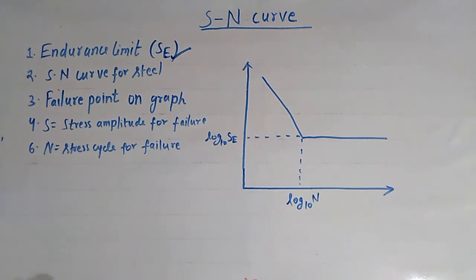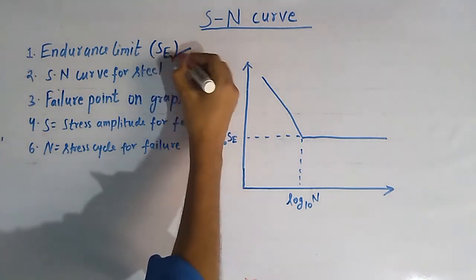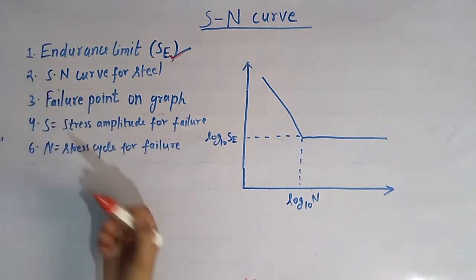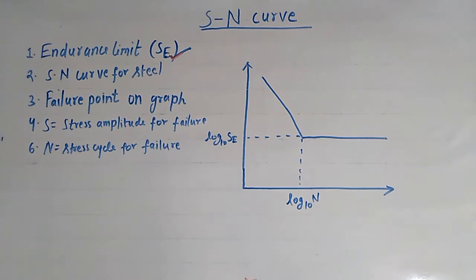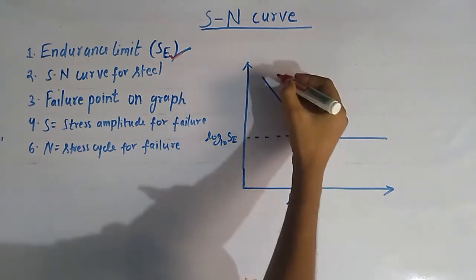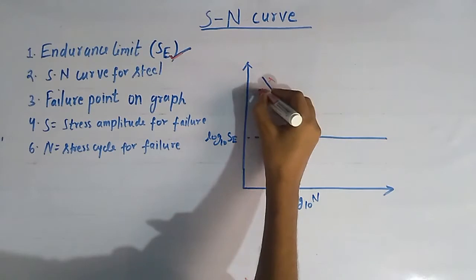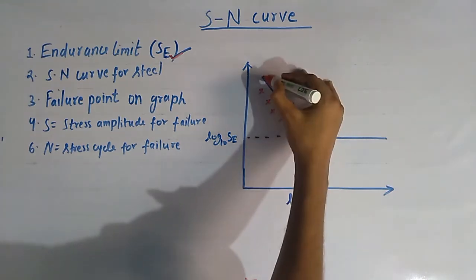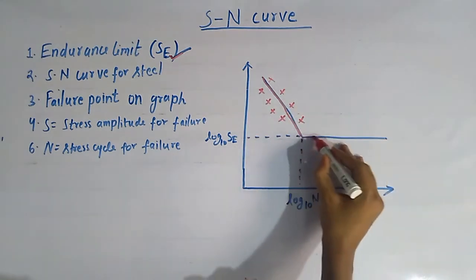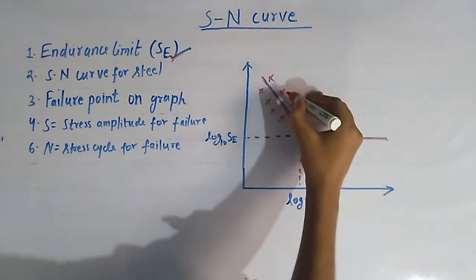We will show how to find out the endurance limit. In the SN curve, this type of curve is obtained when the failure points are plotted using the fatigue testing machine. A specimen is fitted in the fatigue testing machine and the failure points are plotted, as shown here. The best fit line through these failure curve data points is used to find out the endurance limit of the material.